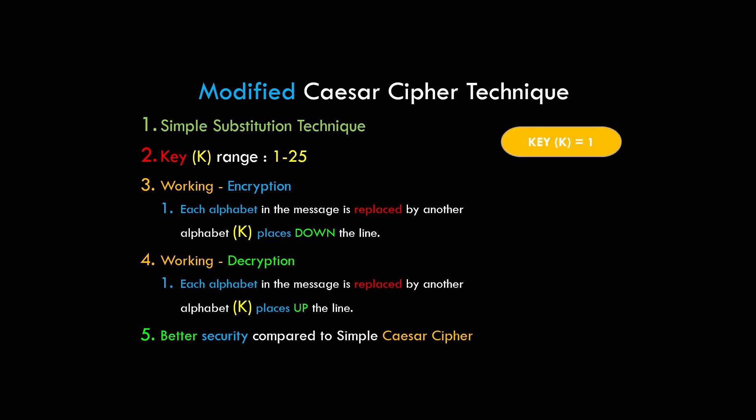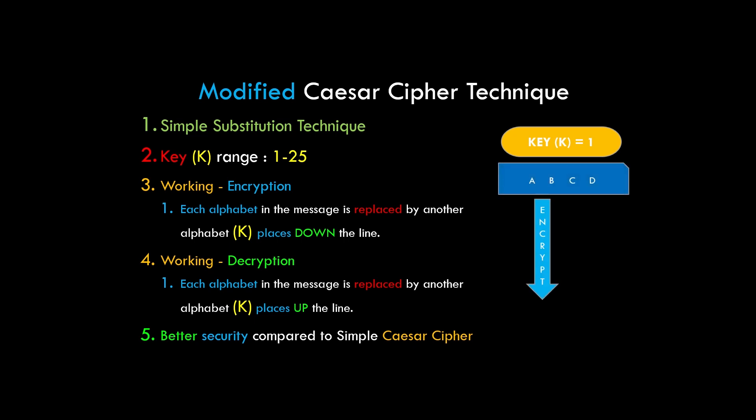As shown in the diagram, we have taken the key value as 1. So each alphabet is replaced by the next consecutive alphabet during encryption — that is, the letters A B C D are replaced with B C D E. During decryption, the vice versa process is applied to get the original text.